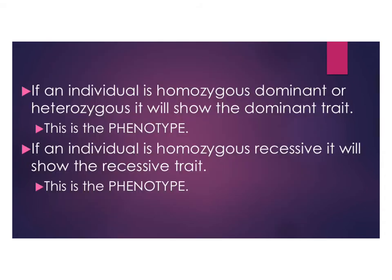To reiterate: if an individual is homozygous dominant or heterozygous, it will show the dominant trait. We call the visible trait the phenotype. So if you have any dominant allele, you will show the dominant phenotype — in our example, purple flowers. The only way an individual will show the recessive trait is if it is homozygous recessive, having both recessive alleles.